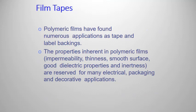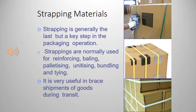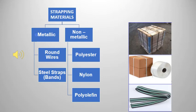Strapping material is used in bundling and tying together tertiary packaging material, assisting in the shipment of goods during transit. They are categorized as metallic and non-metallic types. Metallic types include round wires and steel straps, while non-metallic ones include polyester, nylon, or polyolefin-based strapping materials.